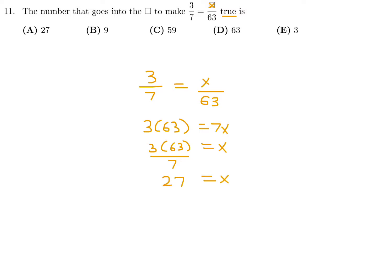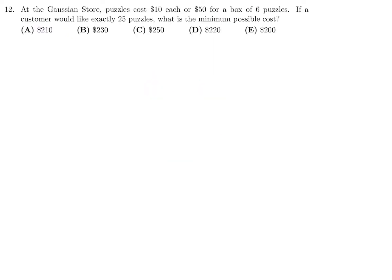Therefore number 11, the answer is A. At the Gaussian Store, puzzles cost $10 each or $50 for a box of six puzzles. If a customer would like exactly 25 puzzles, what is the minimum possible cost?